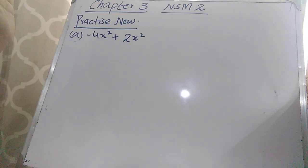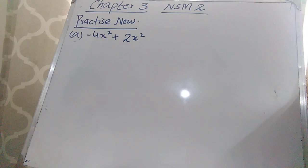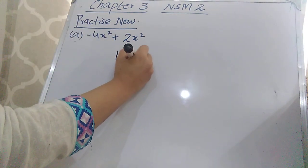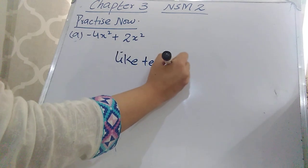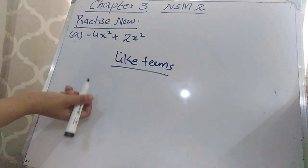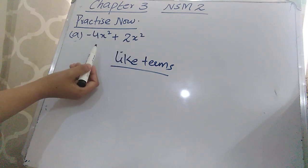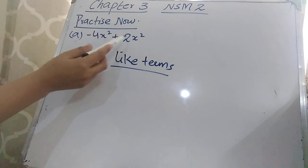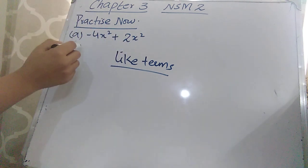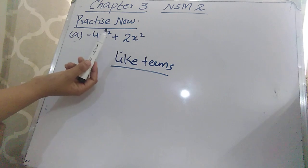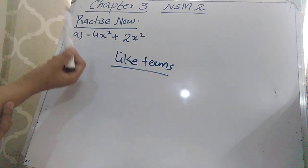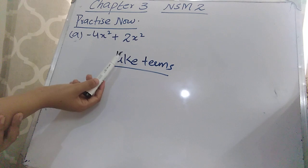While solving expressions, you need to remember one thing: you can only solve like terms together. Like terms are terms whose variables are the same. For example, in this question both terms have x², so both variables are the same and you can solve this expression. Whenever you have the same variables with coefficients, those are called like terms.